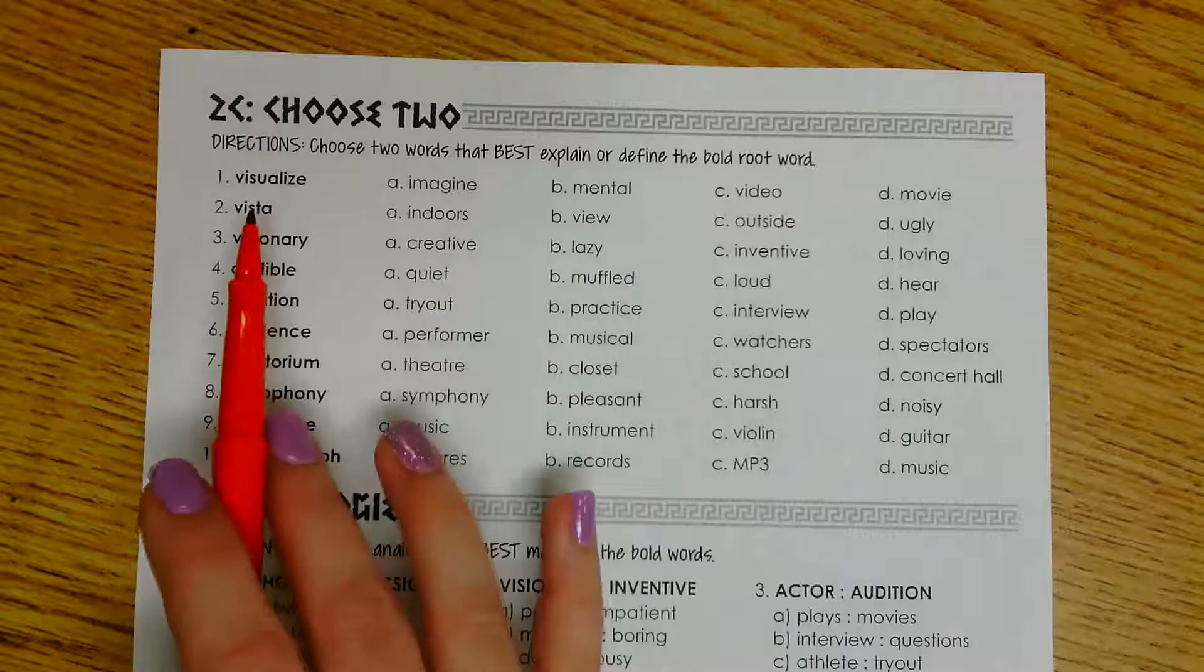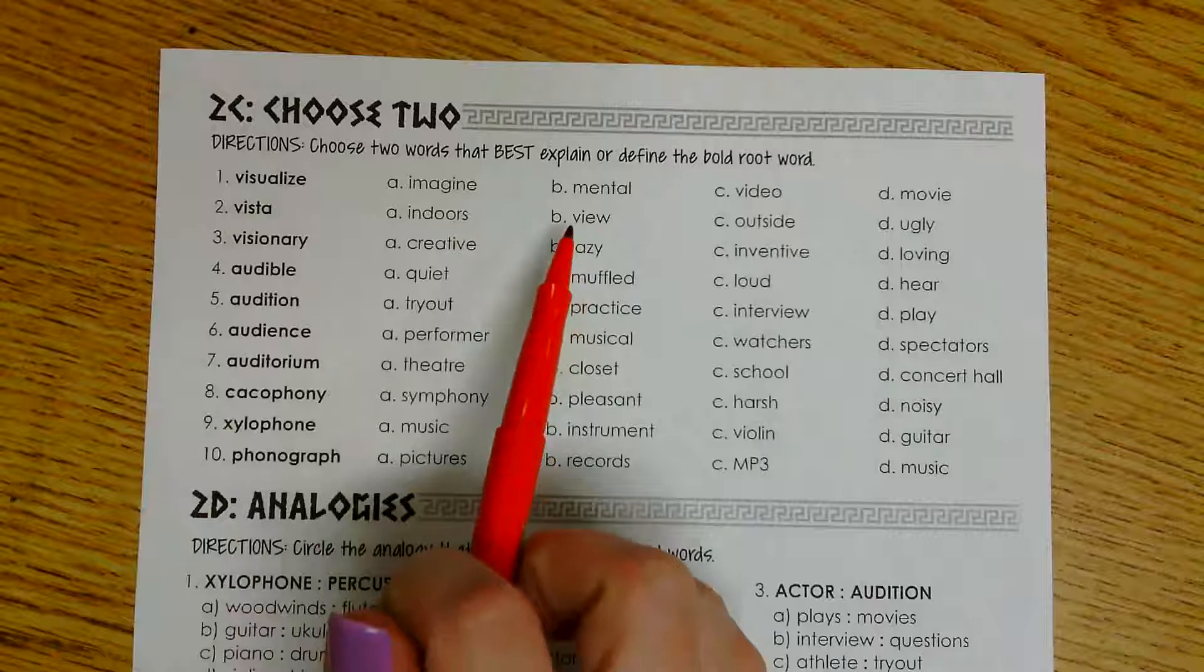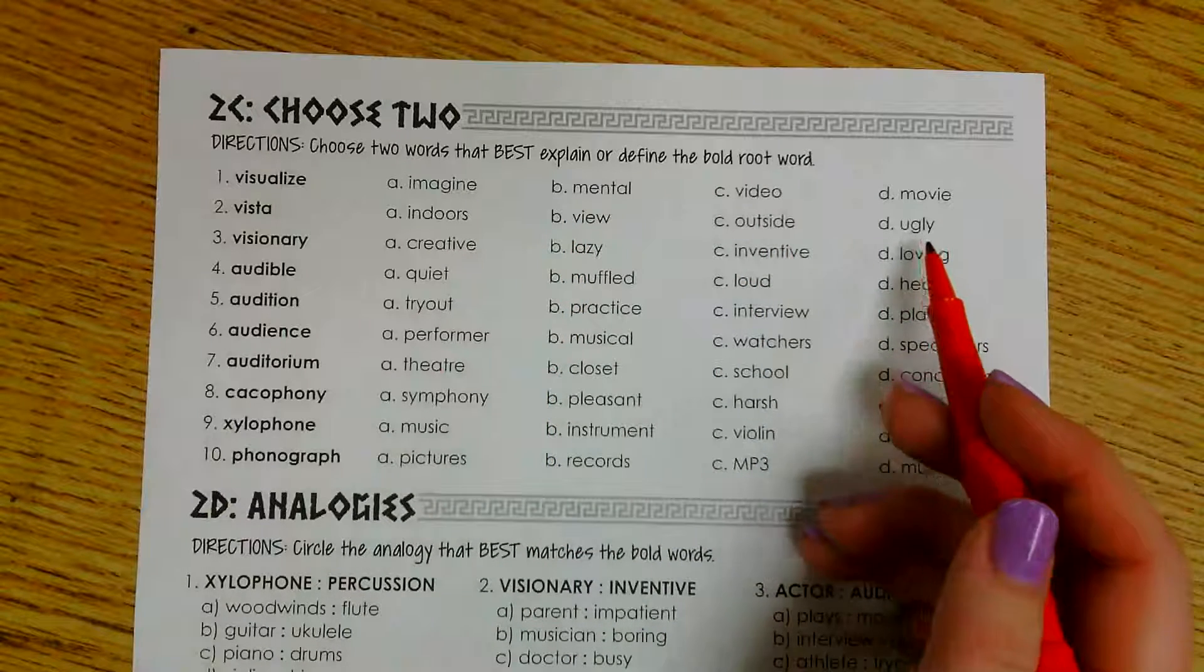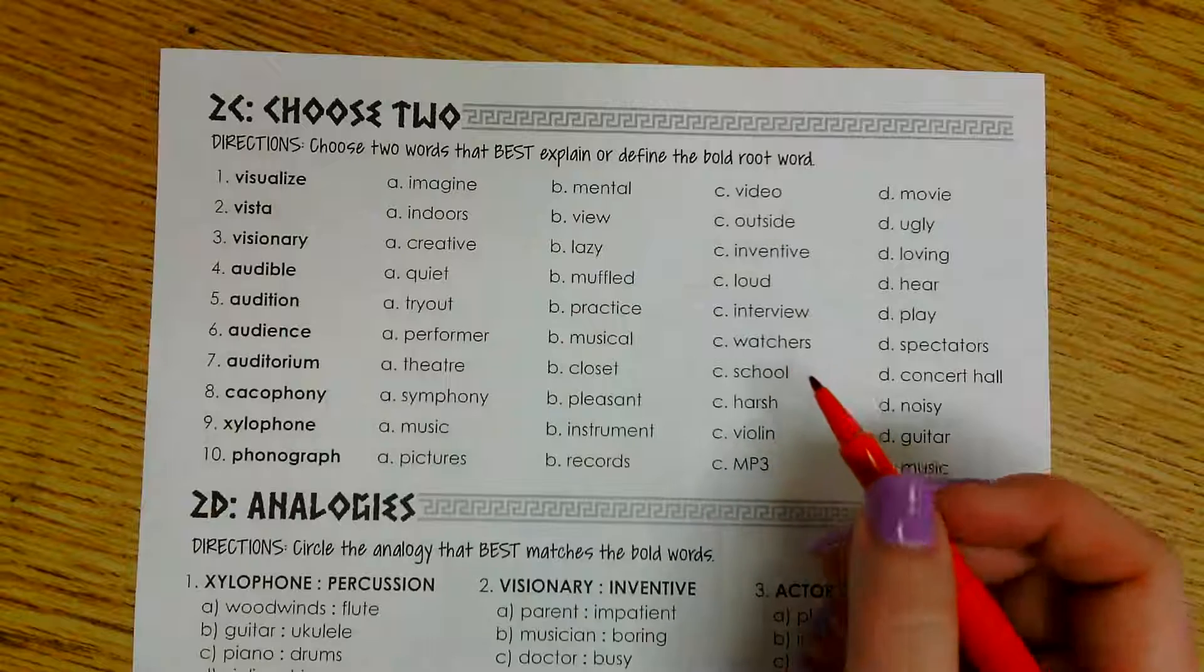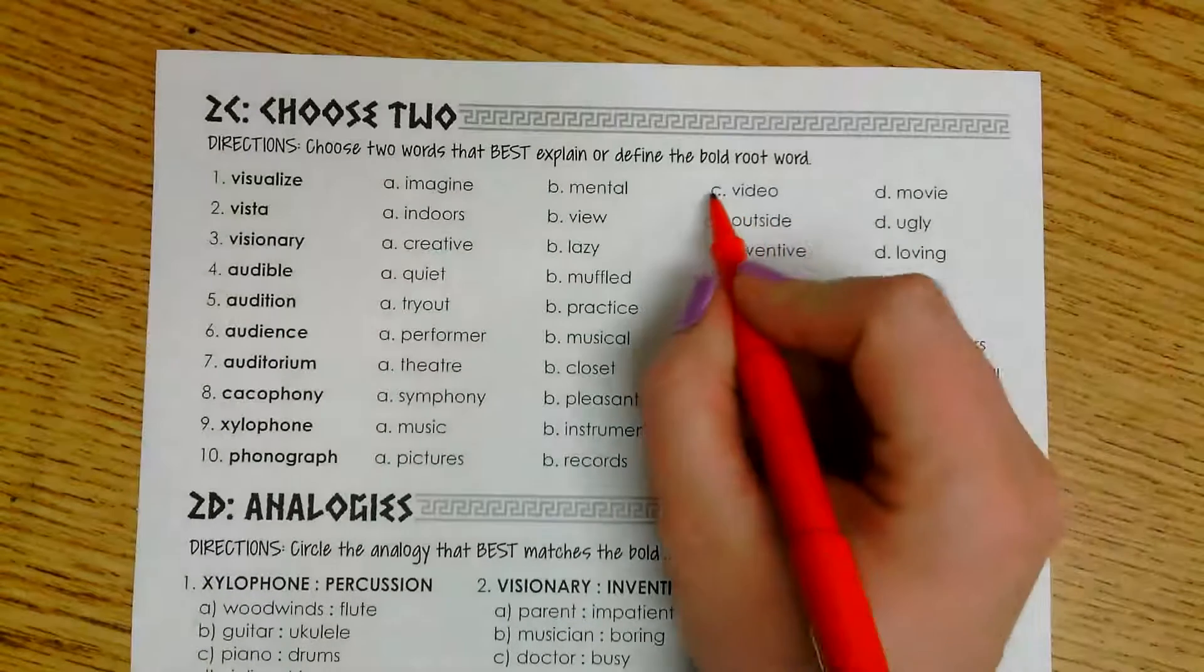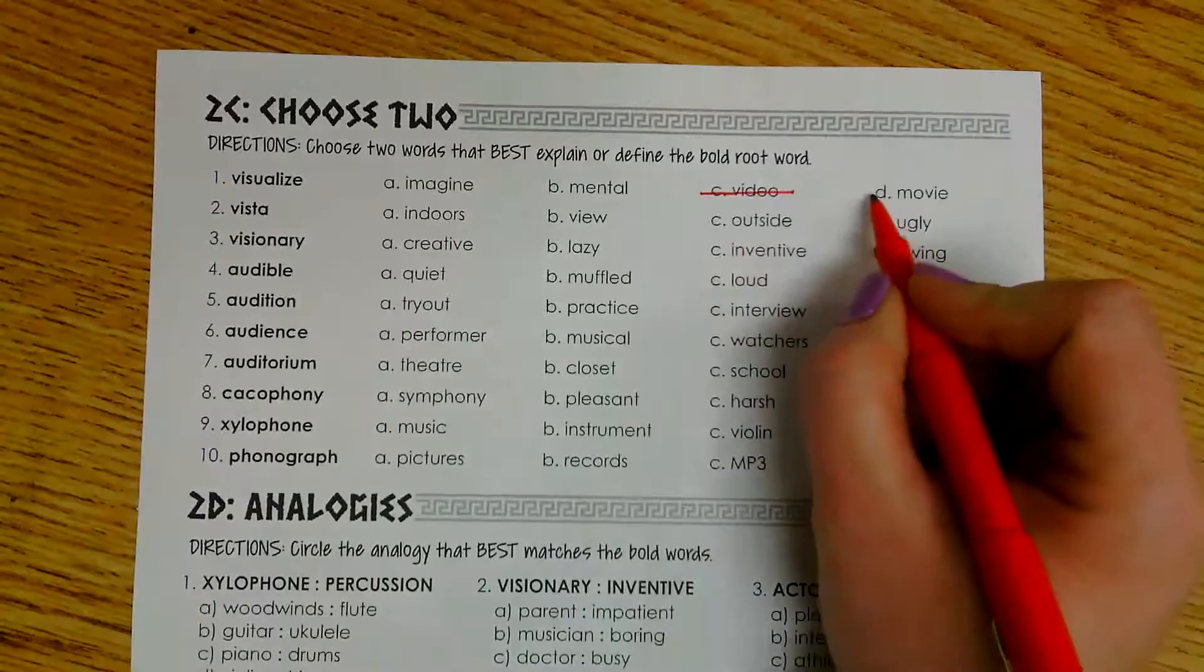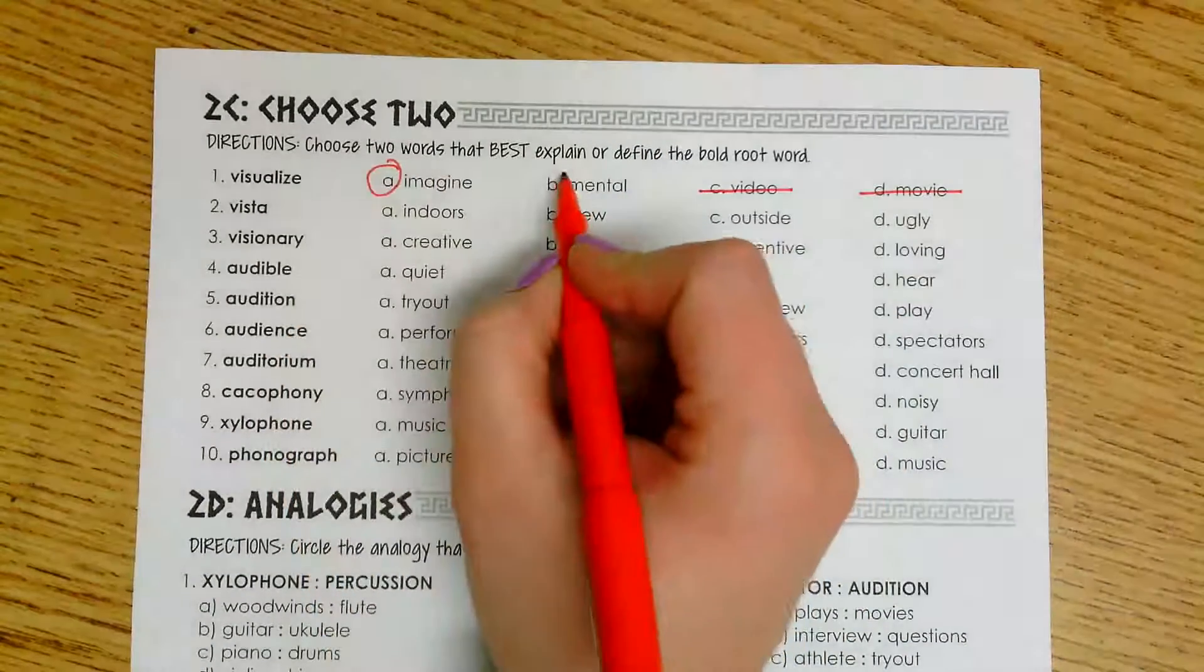For number one, we have the word visualize. Our choices are imagine, mental, video, and movie. Based on our definition of visualize, I know that you are going to picture something in your mind. So that's not going to be a video and that's not going to be a movie. So that leaves me with imagine and mental.